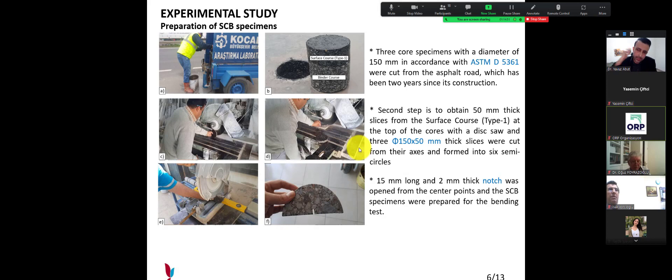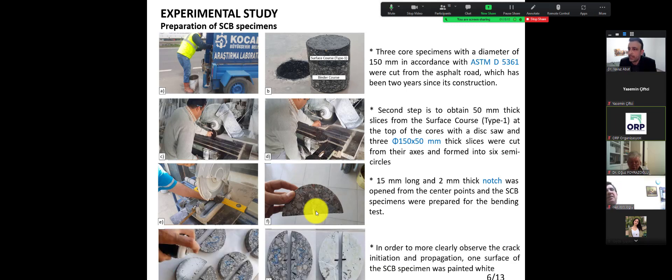Third part is about the notch. A 15 mm long and 2 mm thick notch was opened from the center points and the SCB specimen were prepared for bending test. The last part is about painting. In order to more clearly observe the crack initiation and propagation, one surface of the SCB specimen was painted white.